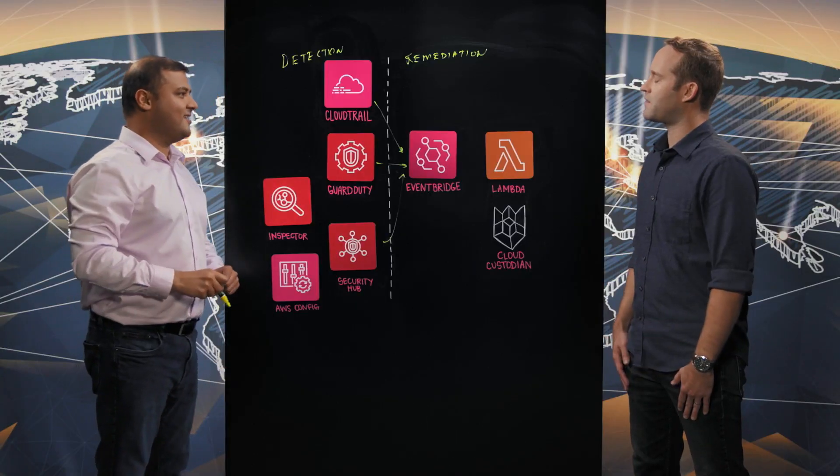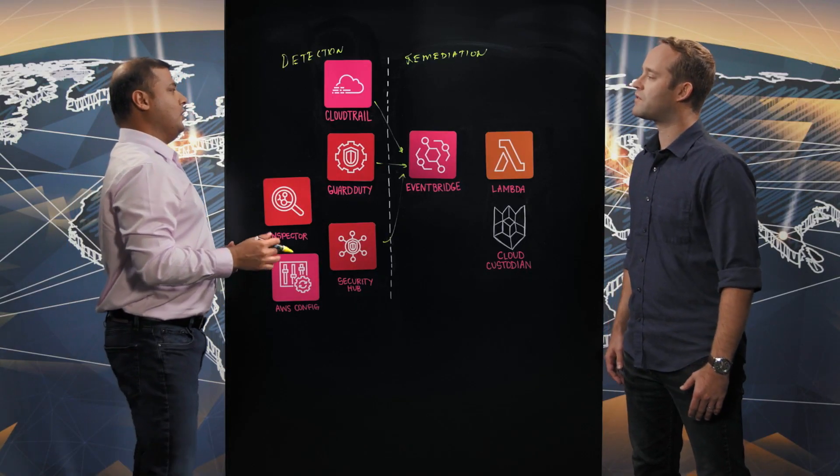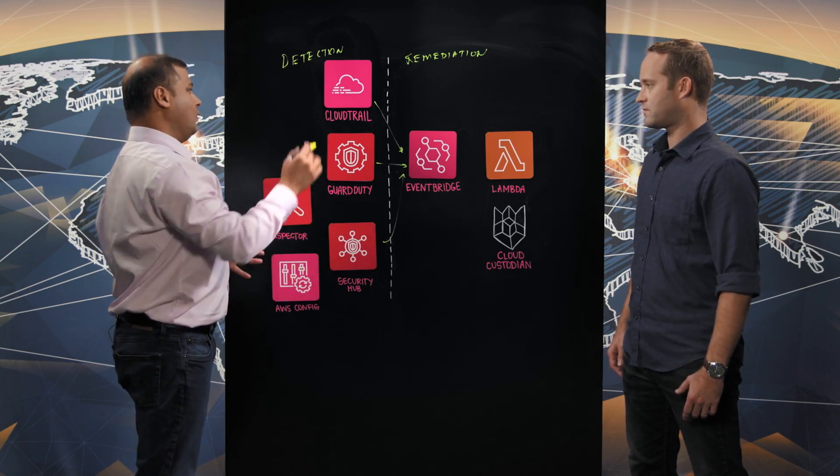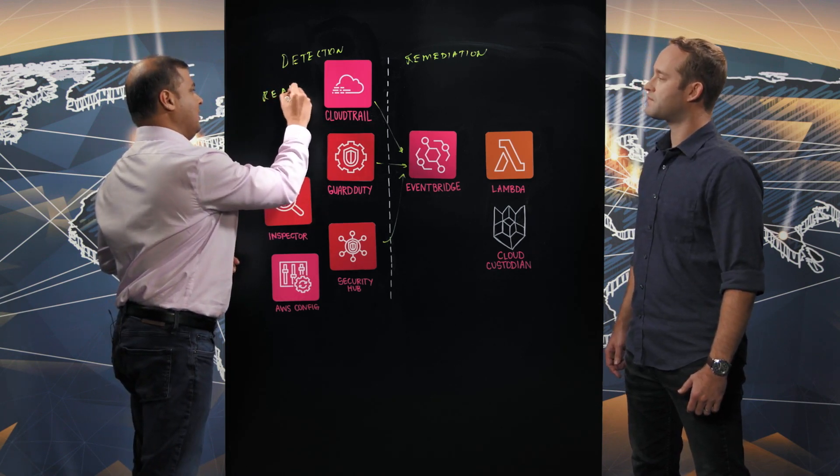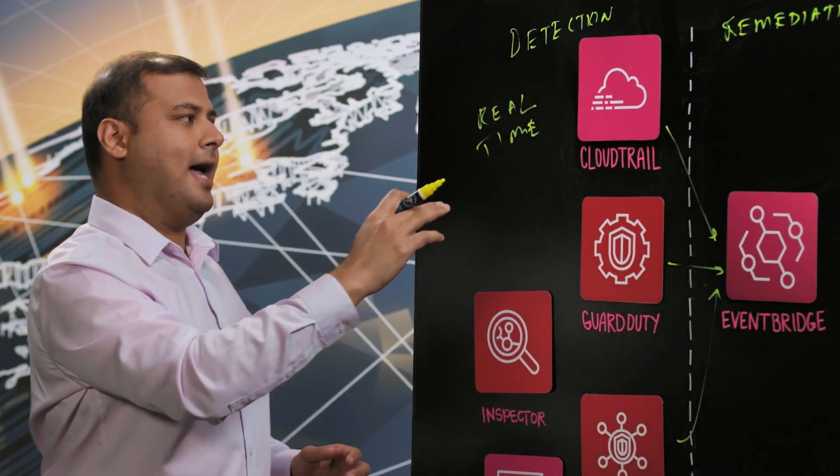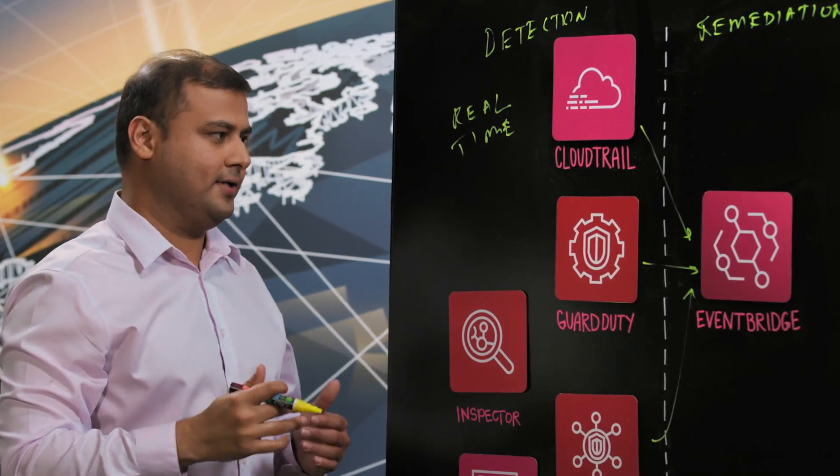Can you tell us a little bit about the detections that you're looking for? Sure. So, we have different AWS services doing different things for us. We have CloudTrail, which looks at real-time events of infrastructure that is being built and those events are funneled to EventBridge, where we check for different security issues.